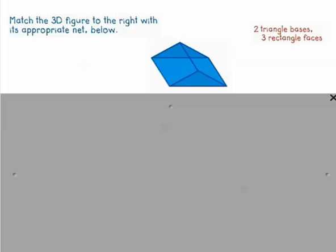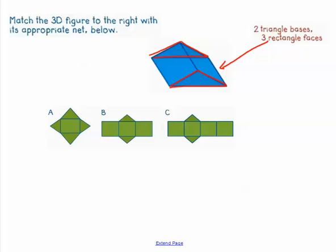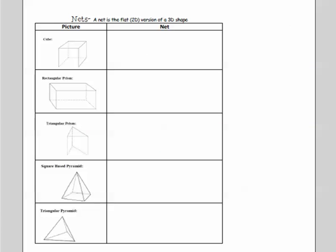Let's look at this example — I want you to match up this 3D figure with the one below. Hopefully you notice it's got a triangular base and another triangular base, which means it's a prism because it's got two congruent parallel shapes. And then it's got three rectangular faces. Hopefully you went with B — triangular bases and three rectangular faces. Now I want you to draw the nets for a cube, the rectangular prism, the triangular prism, a square base pyramid, and a triangular pyramid. Pause the video and come back for the answer.